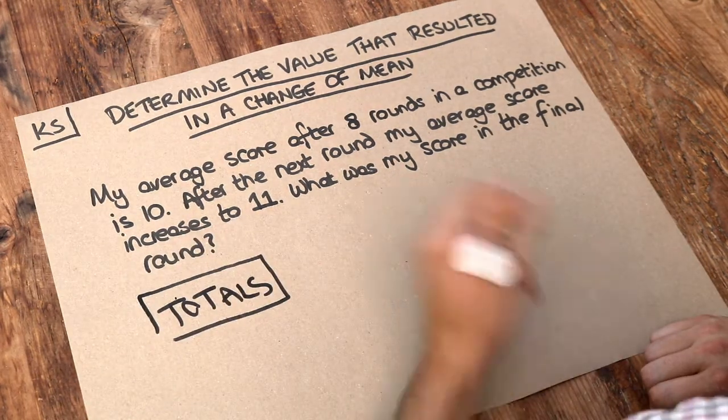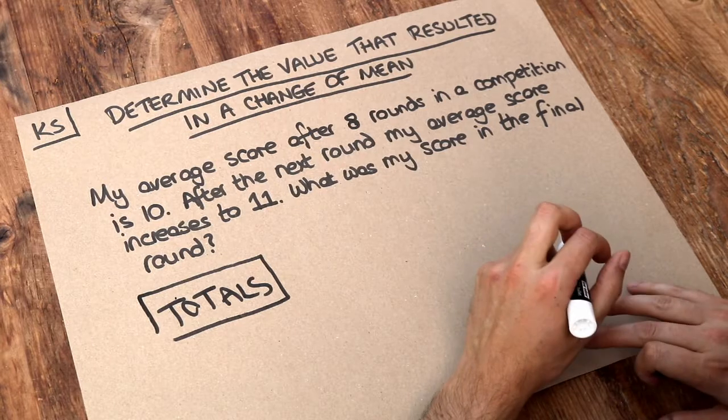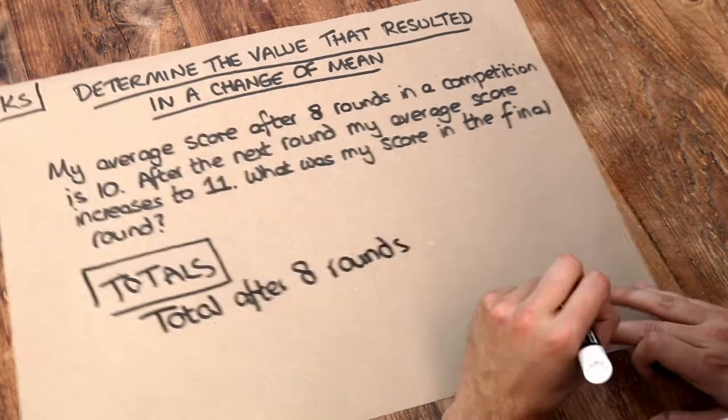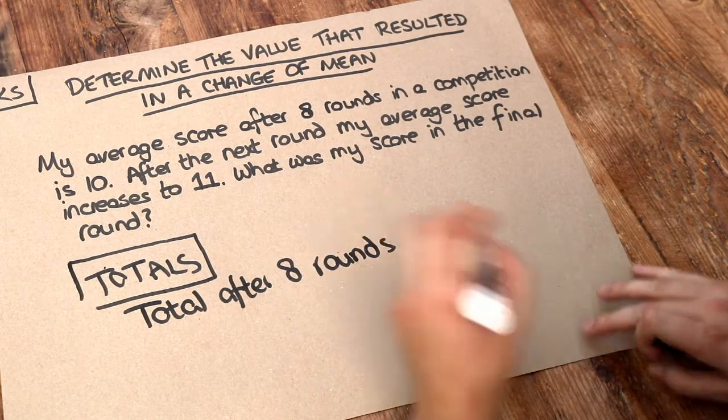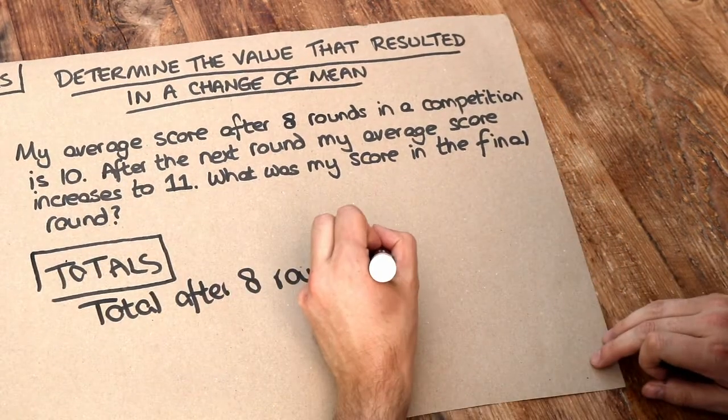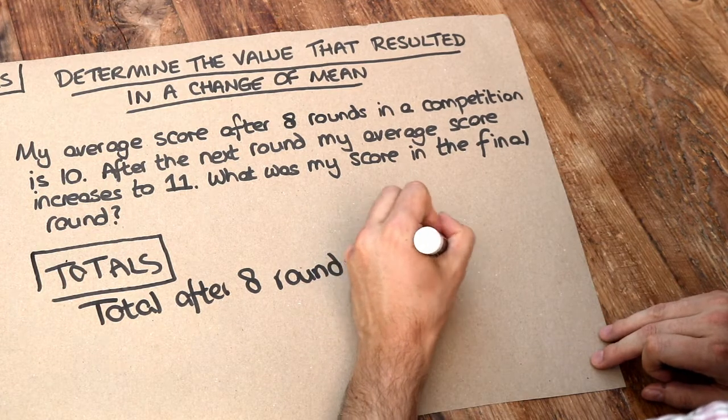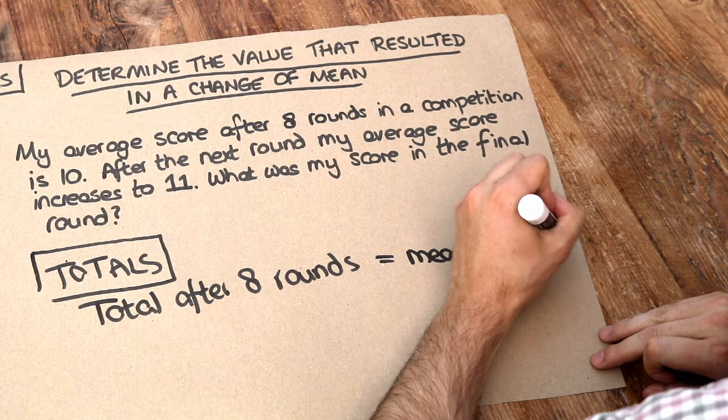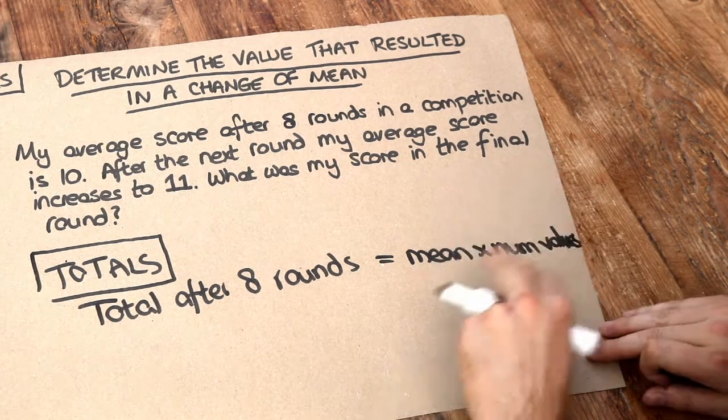So what for example was the total score after the first 8 rounds? Now in a previous video we explored how we could find the total if we knew the mean and the number of values. And it's just this formula here. We just do the mean multiplied by the number of values we have. So it's just a rearrangement of the formula for mean.